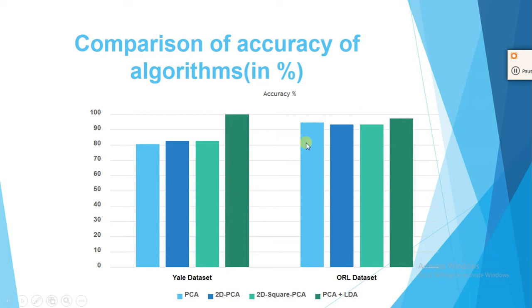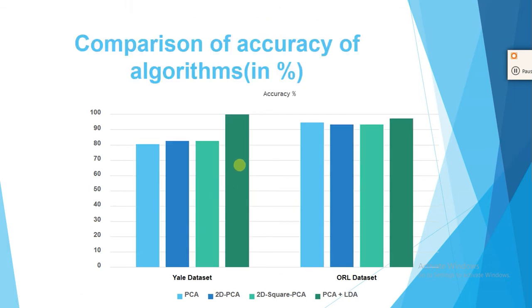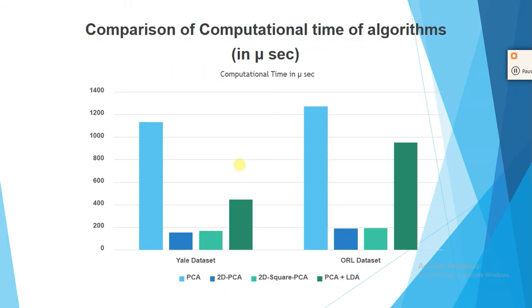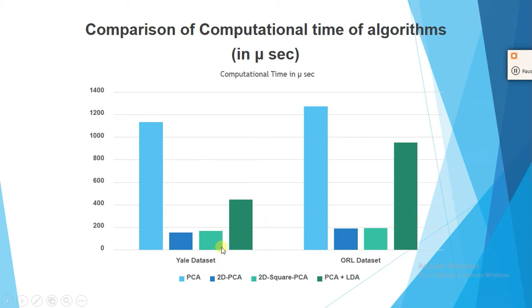For computational time, you can see PCA takes much more time, and PCA plus RDA takes less time than PCA. But 2D PCA and 2D Square PCA take very little time compared to both, and they are exactly equal in time as well as accuracy. Their only difference is in how the new coordinates are written.